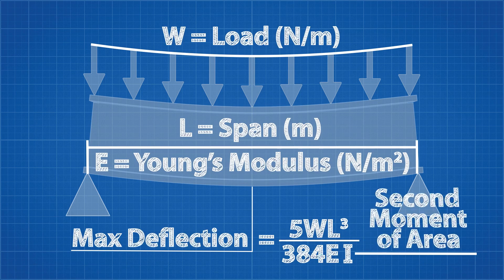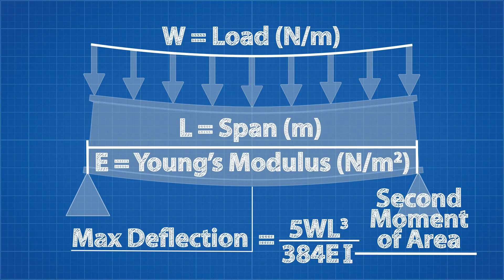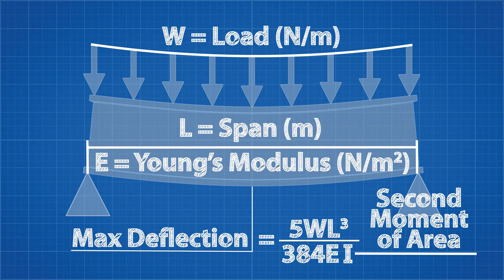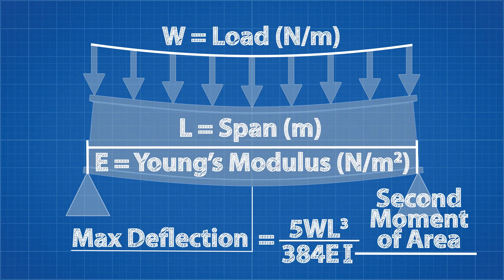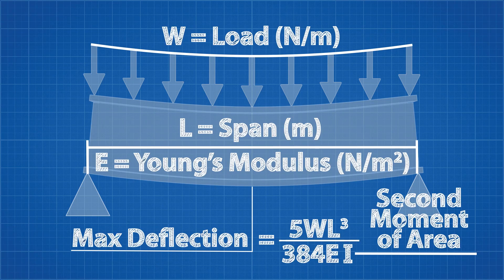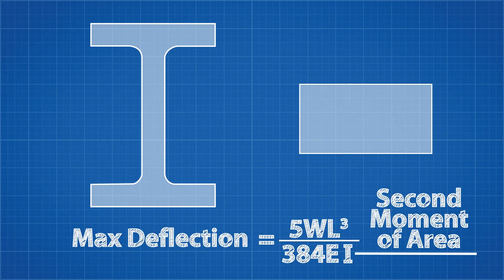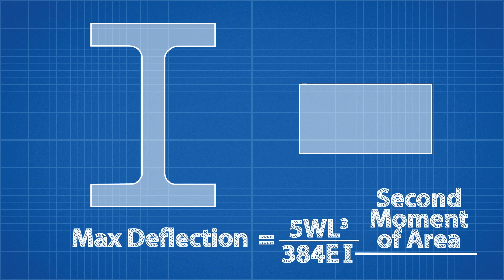But the variable we want to focus on is I, which represents the second moment of area, sometimes called the moment of inertia. This describes the shape of the beam. More specifically, it describes how the material is distributed throughout the shape. These two shapes have the same area, but that area is distributed very differently and that is very important.